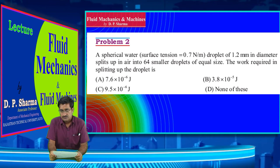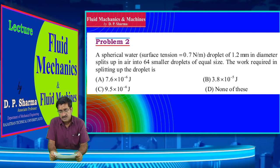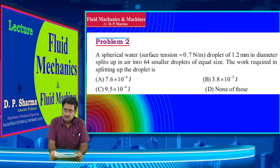Problem 2: A spherical water droplet of surface tension 0.7 N/m and diameter 1.2 mm splits up in air into 64 smaller droplets of equal size. Determine the work required in splitting the droplet. This problem is based on surface tension.